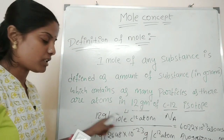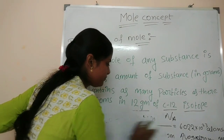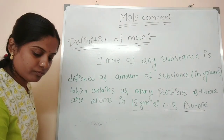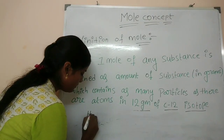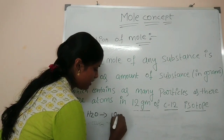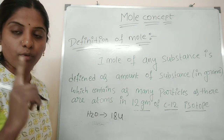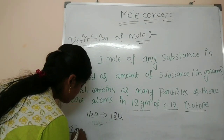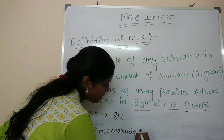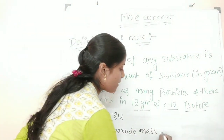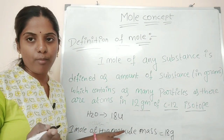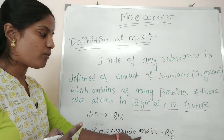We use gram atomic and gram molecular mass. For example, H₂O molecule mass — 1 mole of H₂O molecules has a mass of 18 grams. The mass of 1 molecule is expressed in AMU or unified mass units, and 1 mole of H₂O molecules has a mass of 18 grams.